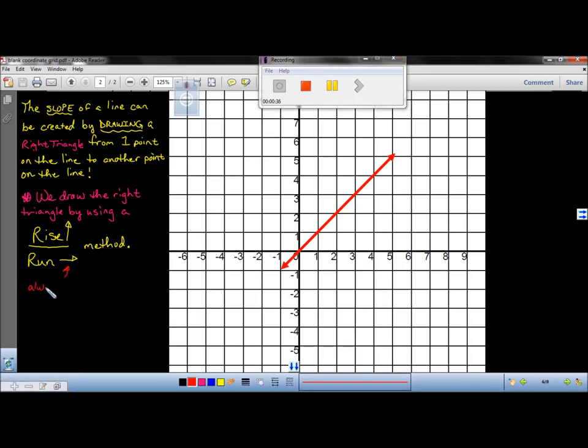Now just as a note, I like to make sure that we always run to the right. So in this particular problem we're going to rise up since the graph is going up, and we're going to always run to the right.